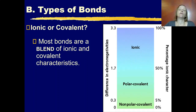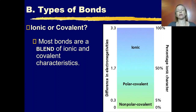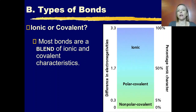So how do you know if a bond is going to be ionic or covalent? In reality, many bonds are neither truly 100% ionic nor truly 100% covalent. There's a whole category of molecules that are in between, and most bonds do have this blend of ionic and covalent characteristics.